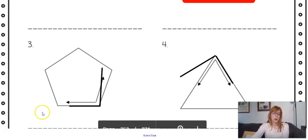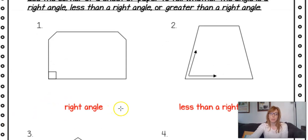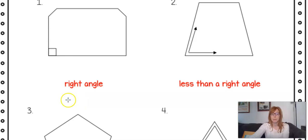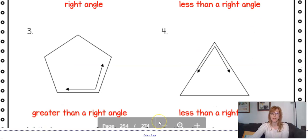And then we'll go to our answers on the next page. Hopefully you came up with all of these. So one was a right angle, two was less than, which is an acute angle. You want to get used to using those angle names. Then you have greater than a right angle, which would be obtuse, and then less than a right angle, which would be acute.